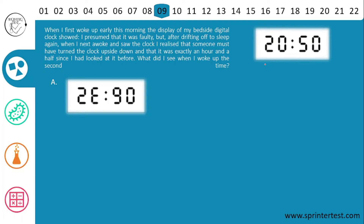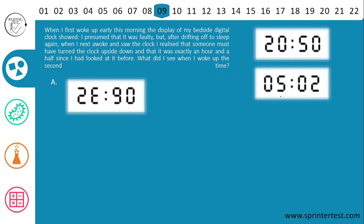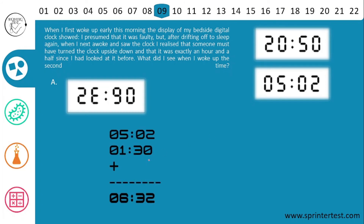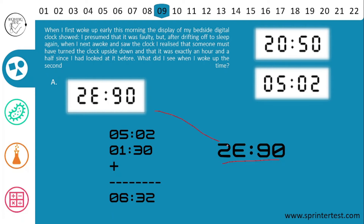When I woke up the first time I saw 20:50 on the clock. Turning the clock upside down reveals the original time was actually 05:02 — 2 minutes past 5. Adding 1 hour and 30 minutes gives 06:32. But since the clock was upside down when I saw it the second time, the displayed reading appears as 2E90. That is our answer.